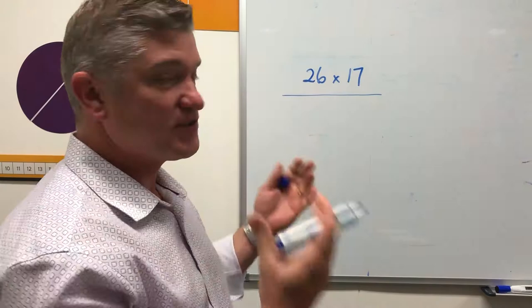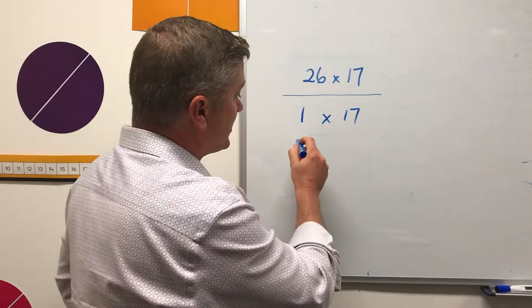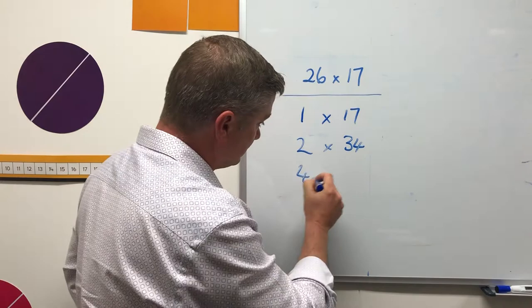So what the ancient Egyptians would do is take one of the factors, multiply it by 1. I'm going to take 17, and then keep doubling and keep doubling.